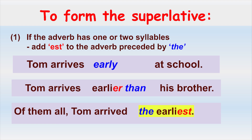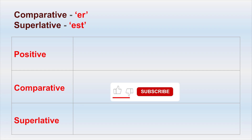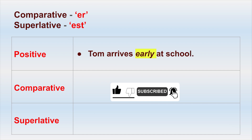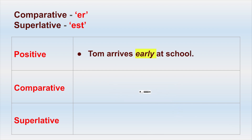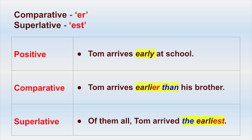Let's look at this chart. It shows the differences in the adverbs using -ER and -EST more clearly. In the positive form: Tom arrives early at school. In the comparative form: Tom arrives earlier than his brother. And in the superlative form: of them all, Tom arrived the earliest.